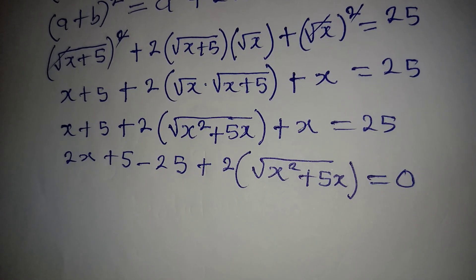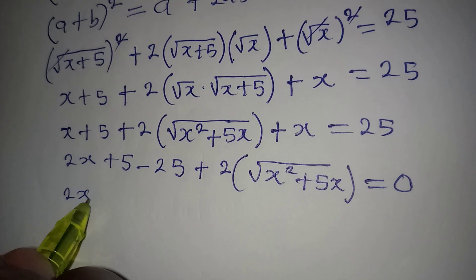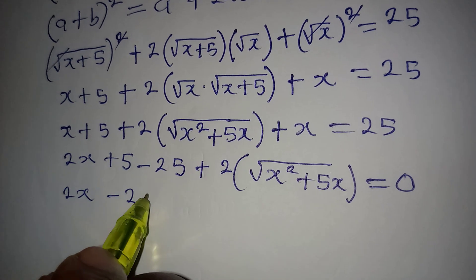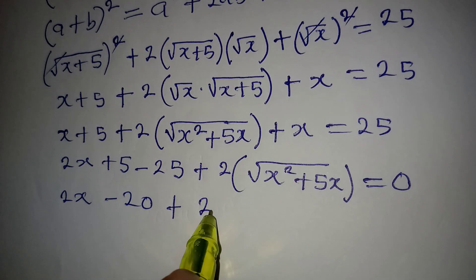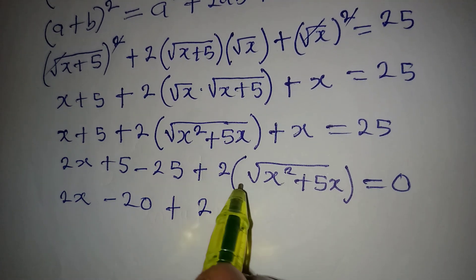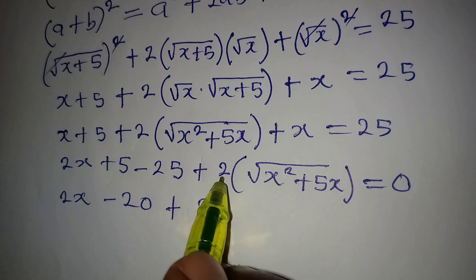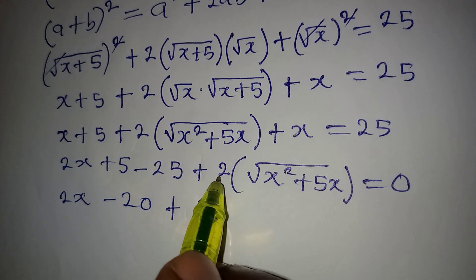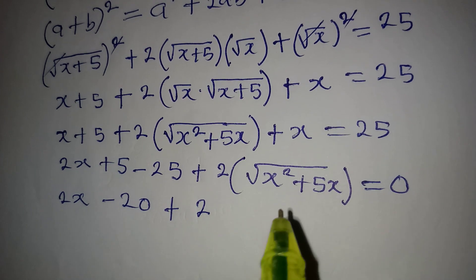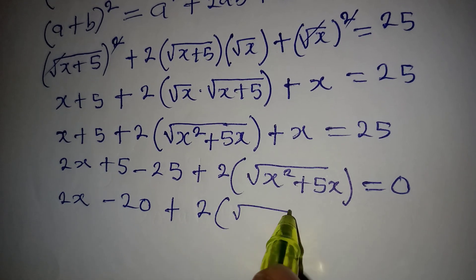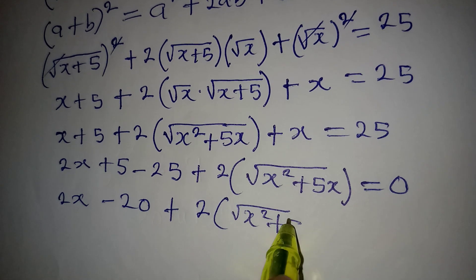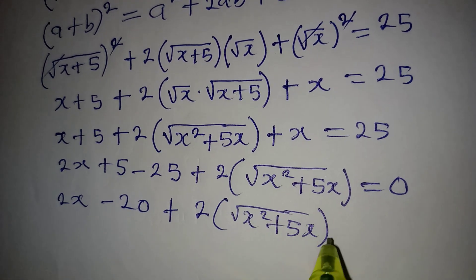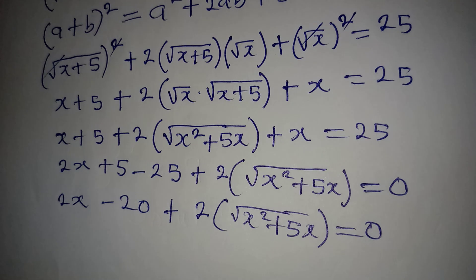So we have 2x minus 20, plus 2 times square root of (x² + 5x), equals 0. We cannot combine the radical term with the others, so we keep it separate.